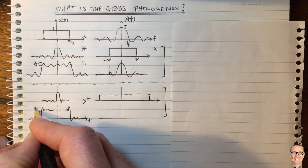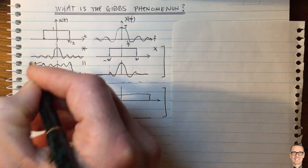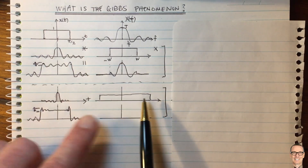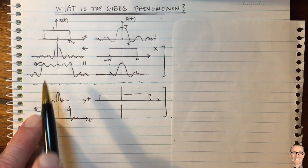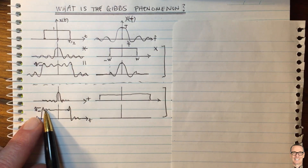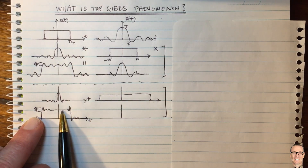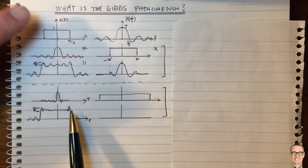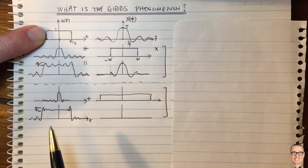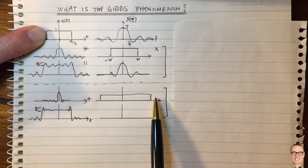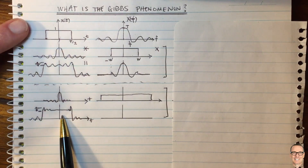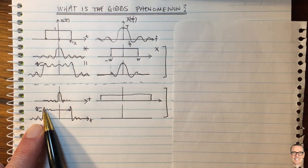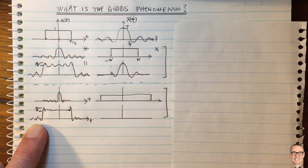That's an interesting and somewhat surprising result — certainly surprising when it was first discovered. As you increase the bandwidth, these oscillations become sharper and come to a flat top more quickly. Including more of the frequency bands gives you a better approximation to the square wave — you're including more frequencies and getting a better approximation. However, the amplitude overshoot does not decrease. That's the Gibbs phenomenon.